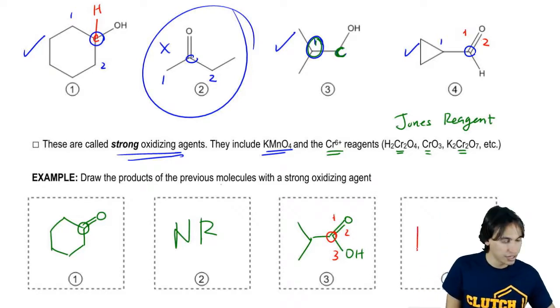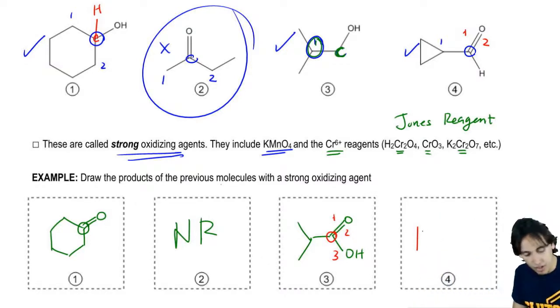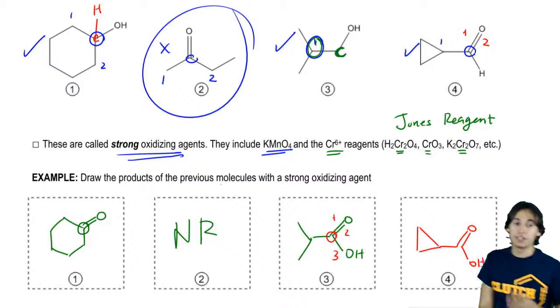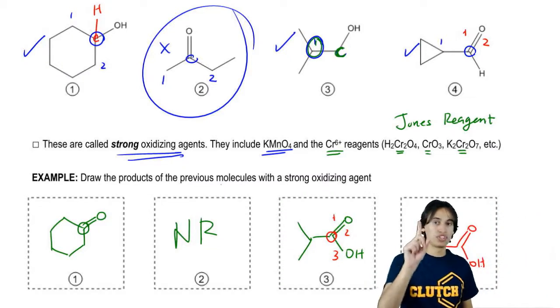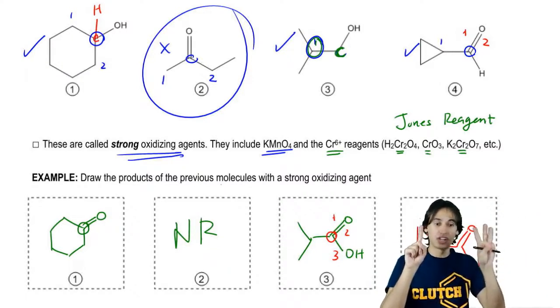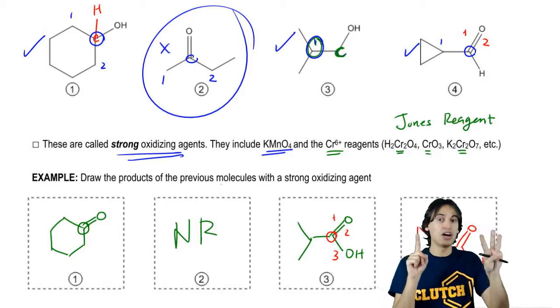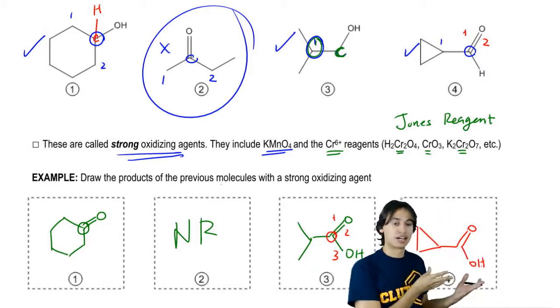So what I'm going to do here is I'm going to draw this molecule, once again, also as a carboxylic acid. Why? Because basically, when you're oxidizing something that has one bond to carbon, that means it's going to have three bonds to oxygen, and when you have three bonds to oxygen, you want it to look like a carboxylic acid.